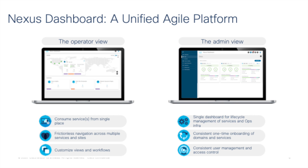The administrative view rationalizes the one-time setup needed for your operations infrastructure. Today, setting up purpose-built appliances means doing site controller setup, user setup, and authentication domain setup repeatedly. With the admin view, you do this just once — setting up sites, services, and users that will have access. Once done, operators and administrators can access everything through consistent user management and control. The goal is frictionless consumption of a unified set of data center operations capabilities powered by the Nexus Dashboard platform.